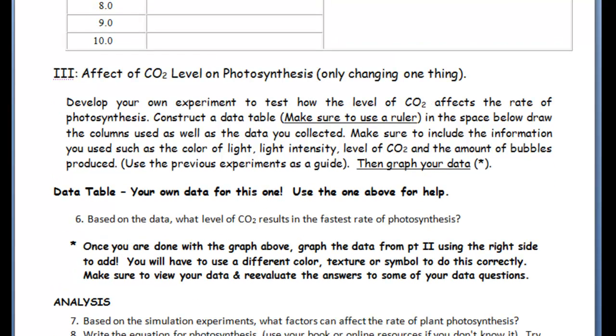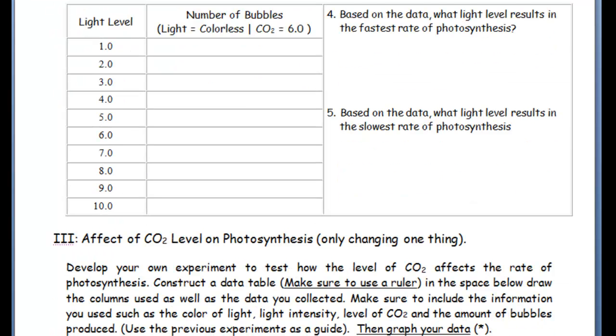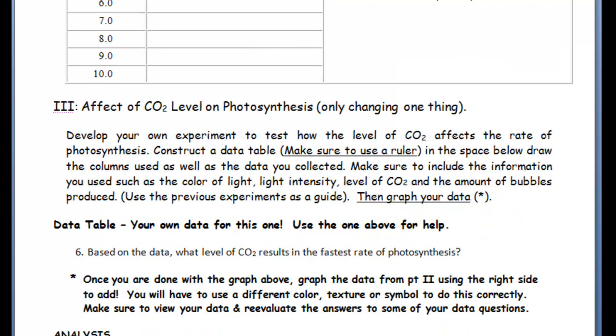And the last thing is you're going to actually design your own experiment with carbon dioxide levels. And what you're going to do is you're going to set up your own data table. So you're going to actually have your light as your constant, your light level as constant, and you're going to actually set up the carbon dioxide levels just like the light going from one to ten. And then I want you to graph that result. So create your own data table, sort of like the one that I'm giving you up there. Answer six.